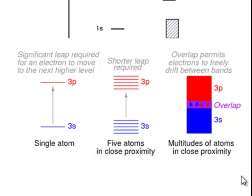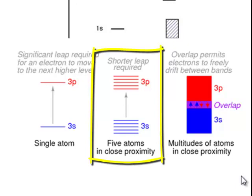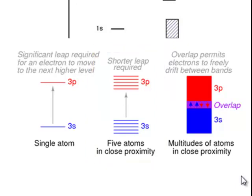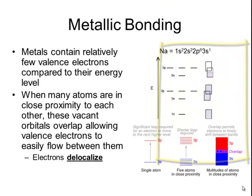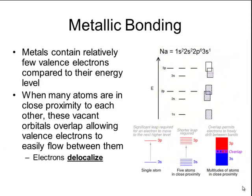But as you start to have more atoms in close proximity, that difference between energy levels becomes smaller. When you have lots and lots of atoms in close proximity to each other, those s and p orbitals can actually overlap. When those vacant orbitals overlap, it allows the valence electrons to flow freely between those two orbitals.